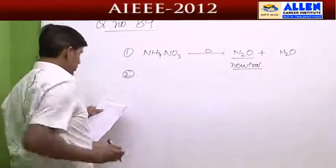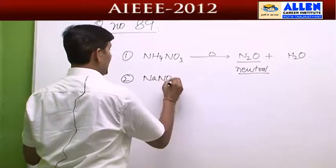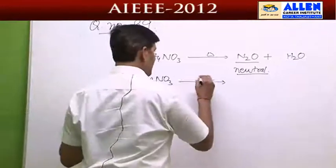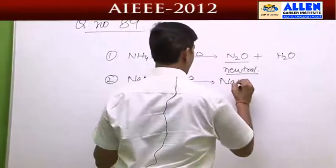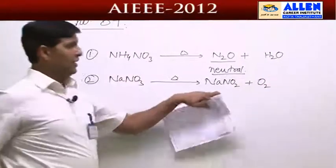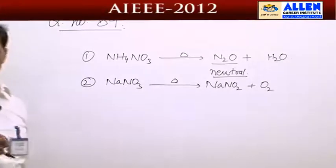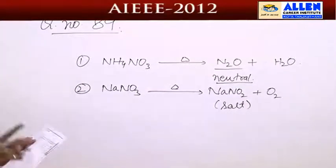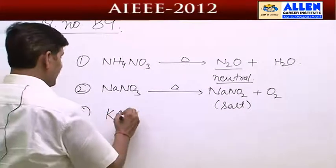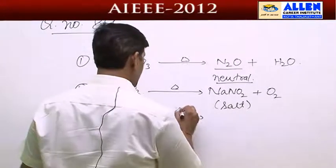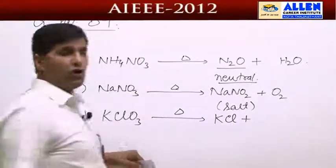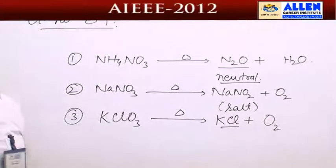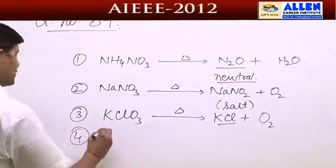The second compound is NaNO3. As we know it is an S-block compound — an S-block salt — and they are highly thermally stable. On decomposition they produce sodium nitrite plus oxygen. Sodium nitrite is a salt, so there is no question of acidic or basic. The third compound is KClO3, an oxy salt, which on thermal decomposition produces oxygen and KCl — again a salt. So there is no chance of a correct answer here.